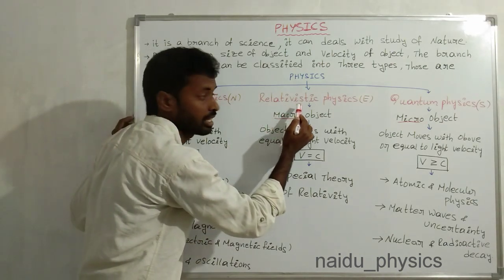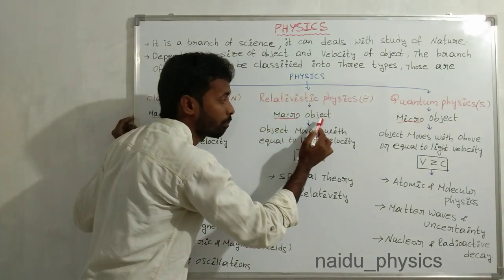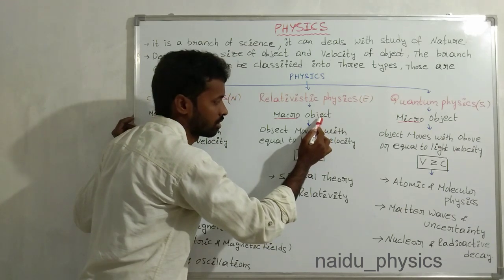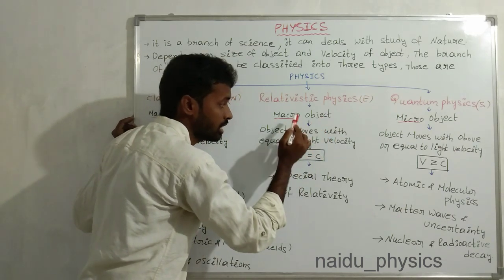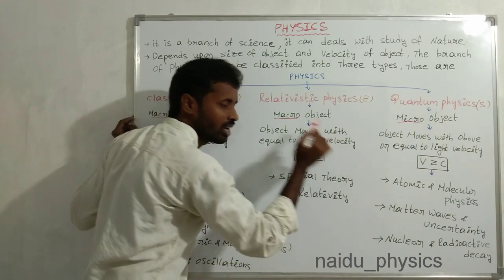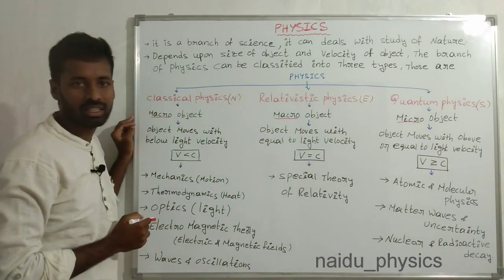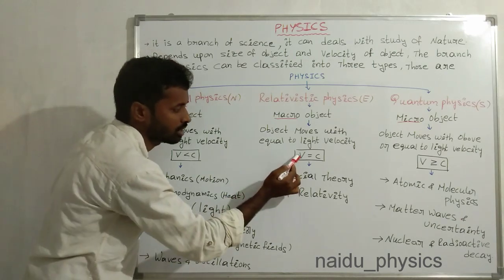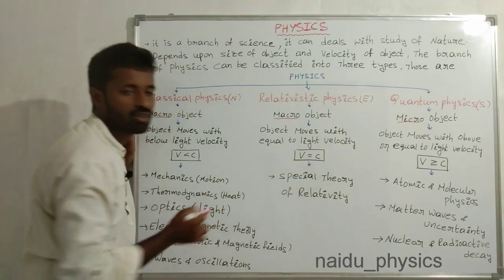Relativistic physics can explain behavior of macro objects, but these macro objects move with equal to light velocity. That's why mathematically it can be represented by V equal to C.